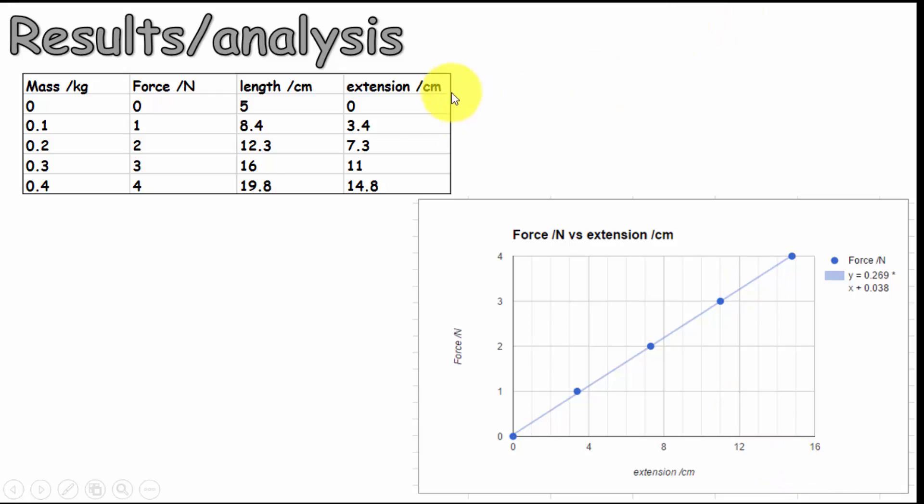So I've got the results in. As you can see, I've recorded the mass, which I then convert to force by doing weight equals mass times gravity. So we're getting approximately 1 newton for every 100 grams. I measured the length each time, but then I have to subtract the original length to get the extension. So for instance, with a force of 0, the spring had a length of 5, but the extension was 0. So I just subtract 5 from all these numbers here, which gives me the extension.